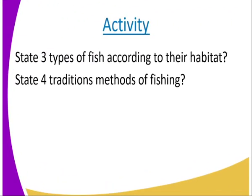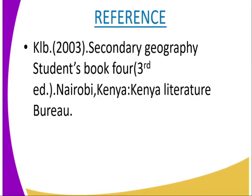That marks the end of our lesson. The assignment is: state three types of fish according to their habitat, and state four traditional methods of fishing. For more information, you can visit the KRB 2003 Secondary Geography student book for that edition.